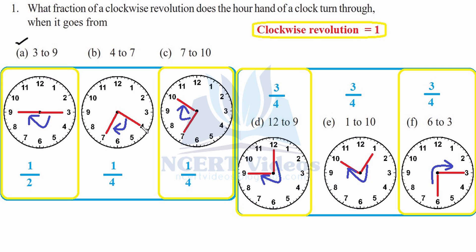Part b: from 4 to 7. Initially it is at 4 and it goes to 7, it goes 15 minutes. If 4 was at 3 and 7 was at 6, it would be 90 degrees, so it is one-fourth of the total revolution. Part c: 7 to 10 — take 7 to 6 and 10 to 9, and again you get one-fourth of the whole revolution.